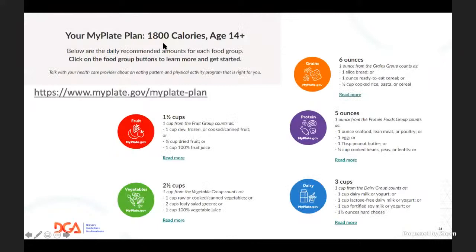For your age and calorie level, the tool specifies things like a cup and a half of fruits, two and a half cups of vegetables, and six ounces of grains. It gives examples, and if you click on any food group—like fruits—there's extensive additional information behind it: how much do I need, why is it important, what's in the group, and serving sizes.